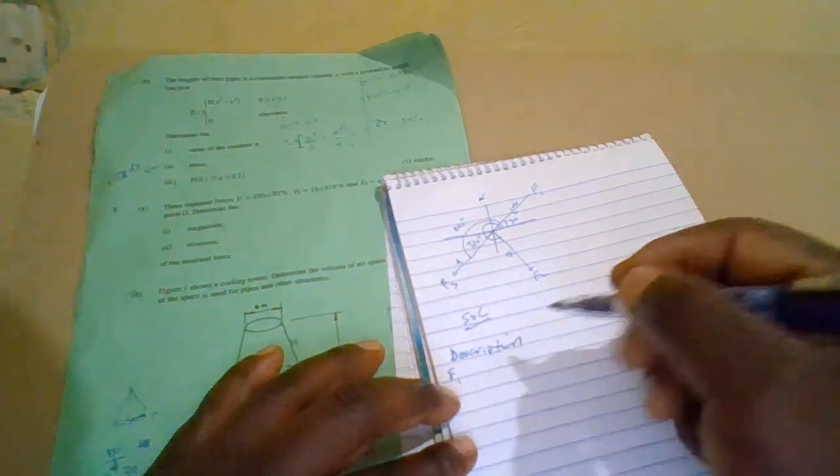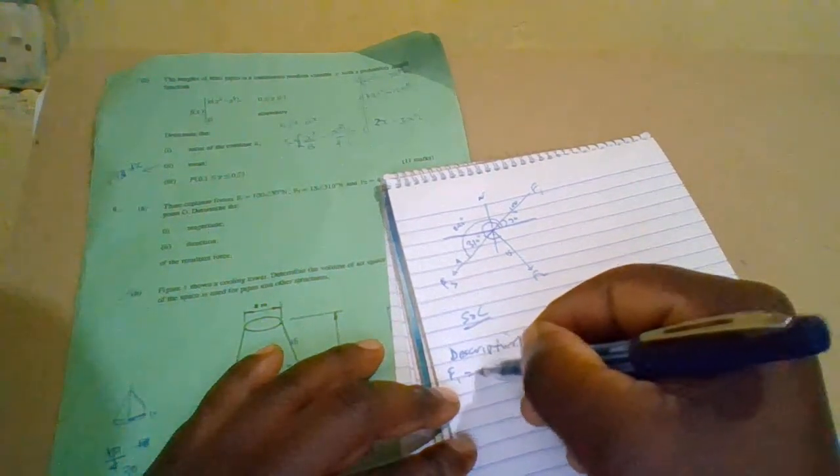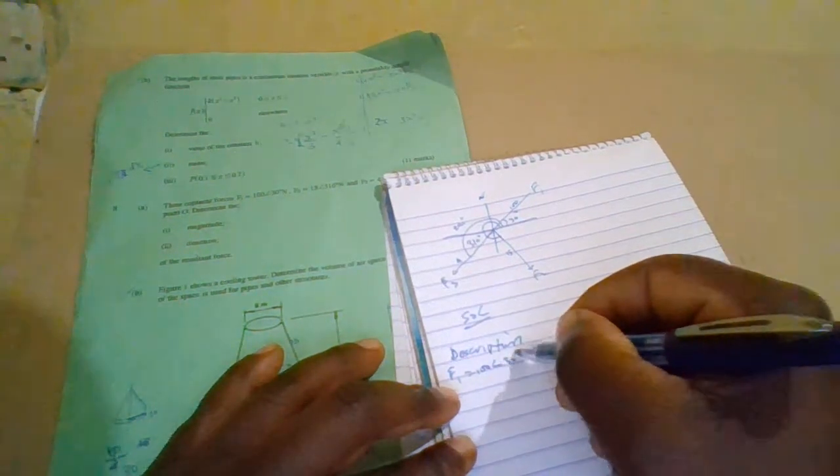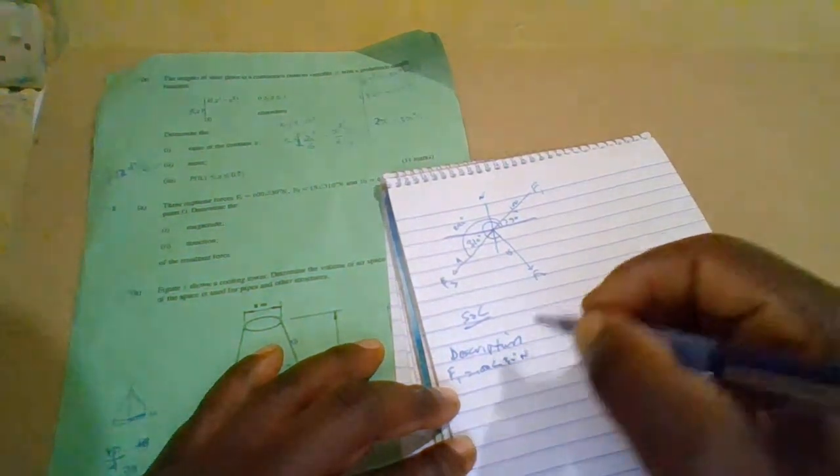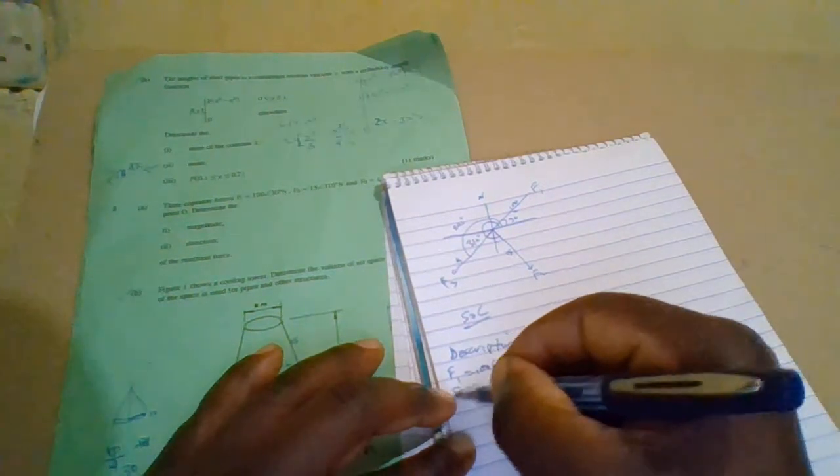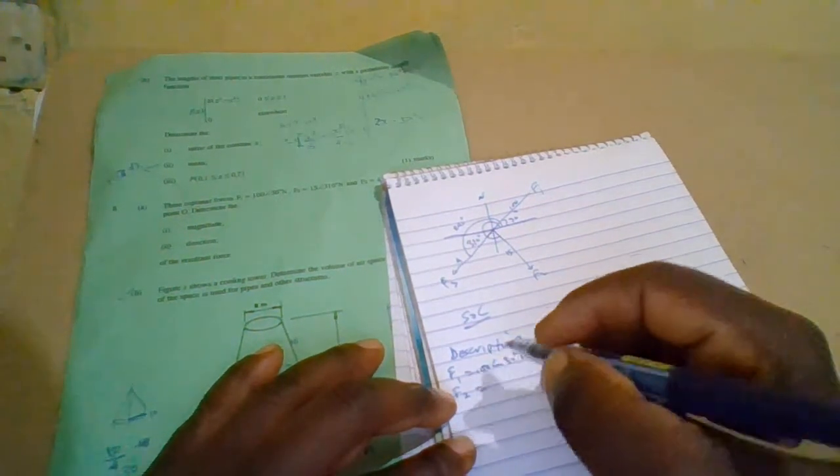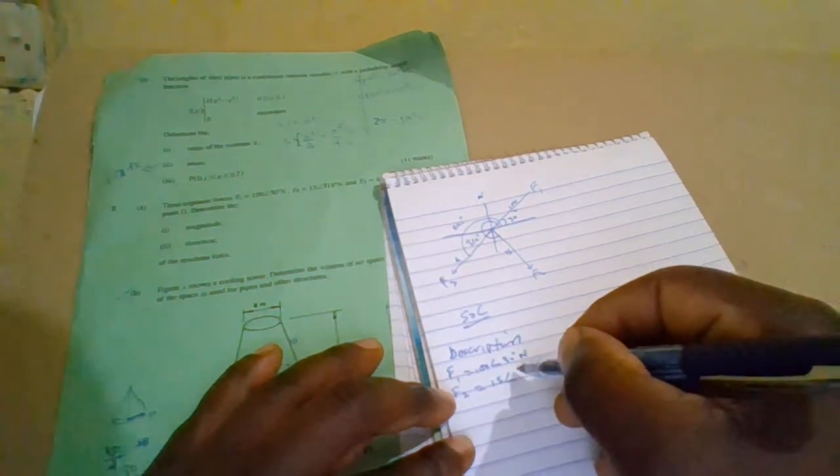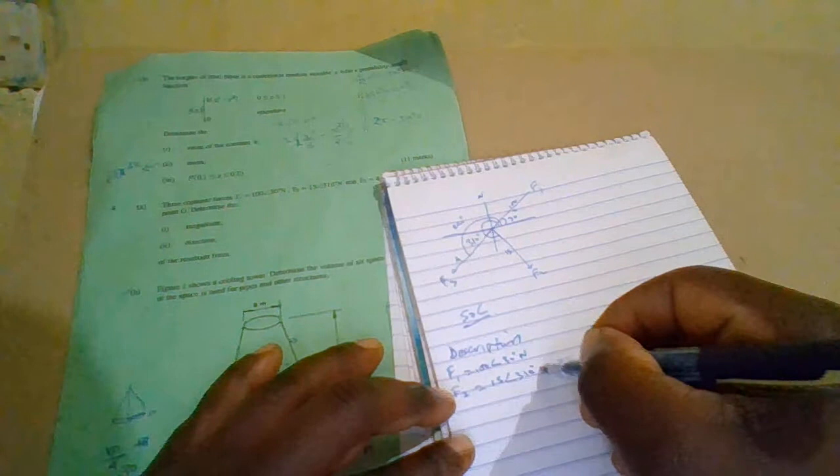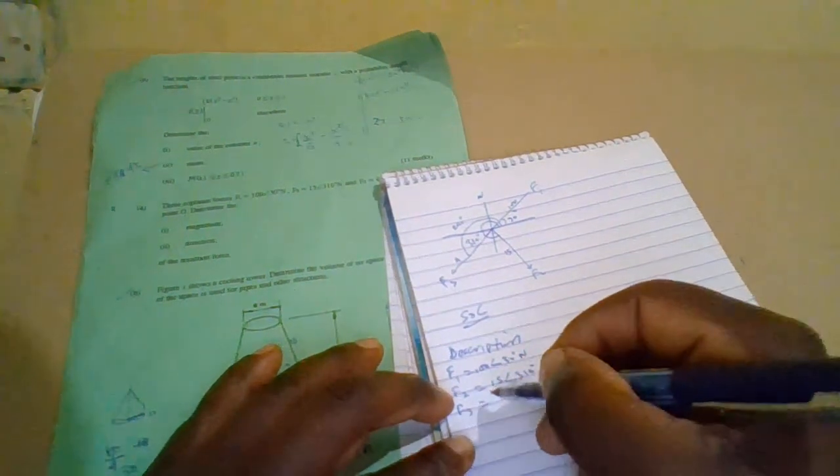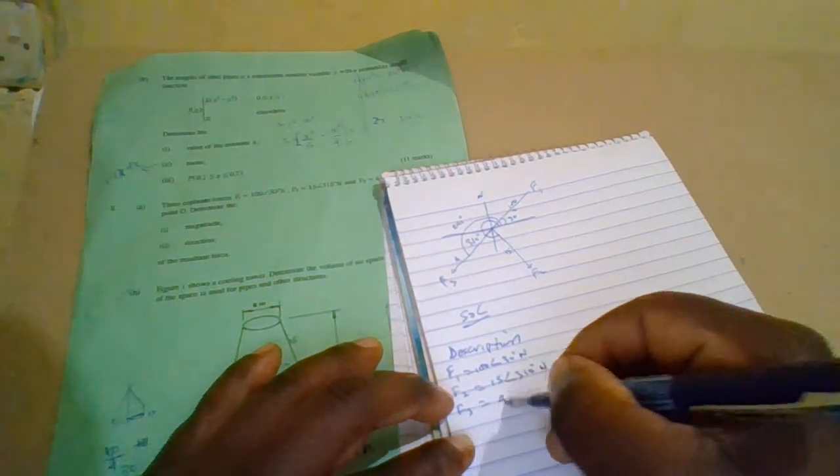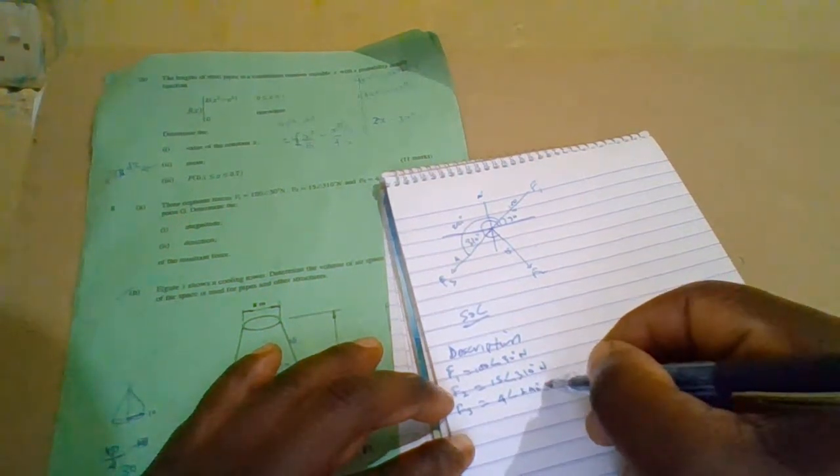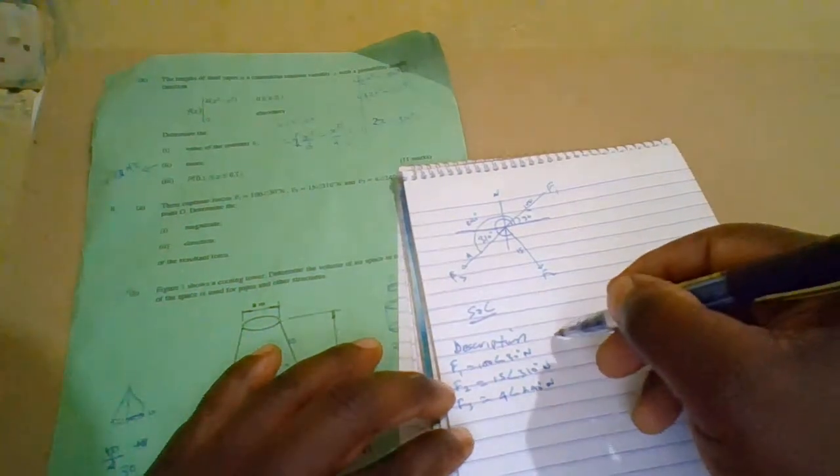We have F1 equals to 130 newtons, and then F2 equals to 15 at 310, then F3 equals to 4 at 240. So those are description.